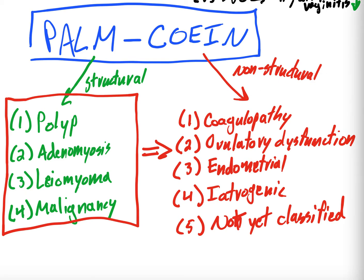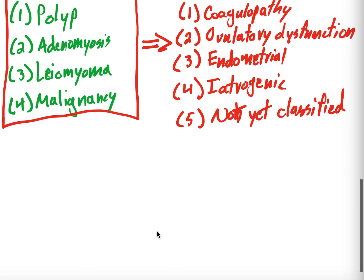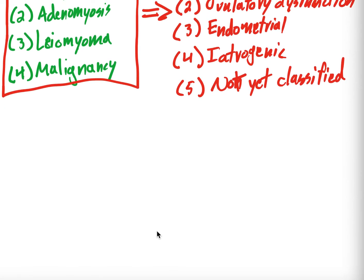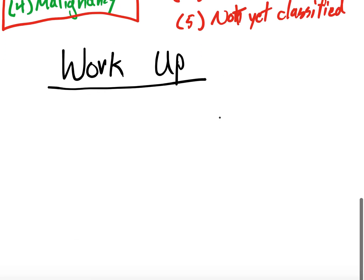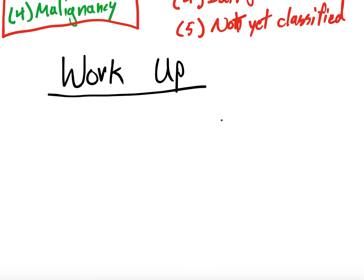Then, just quickly, I think a lot of this stuff is kind of somewhat obvious. We'll just talk about kind of a general workup. So how are we going to work these patients up? I should say, so for Palm-Cohen, I'm going to do videos on a lot of those. So stay tuned, and I'll link some of those at the end. But we'll do videos on cervical polyps, adenomyosis, leiomyomas, some on malignancy as well, coagulopathy, et cetera. So stay tuned for those, and please check them out if you're interested.